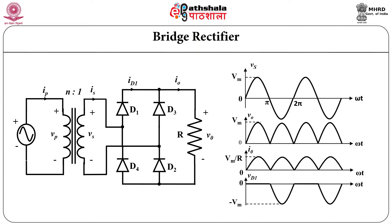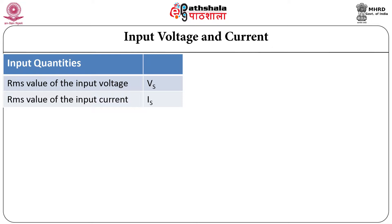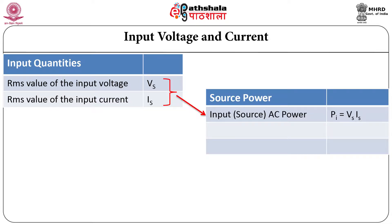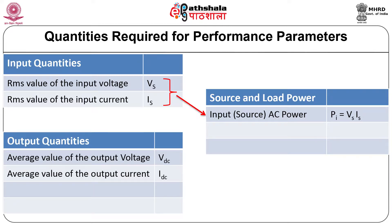The quality assessment of the diode rectifier is done according to various performance parameters. To determine those performance parameters, we will require the knowledge of input voltage and input currents. The input quantities are in most cases input voltage and input current. If you know the input voltage and input current, we can determine the input power which is AC power, that is Vs into Is. The input voltage is AC, but we cannot specify the type of the input current — it may be AC or it may be DC. Output quantities are V0 and I0. From the output voltage waveform, one can determine the average value of output voltage and average value of output current.